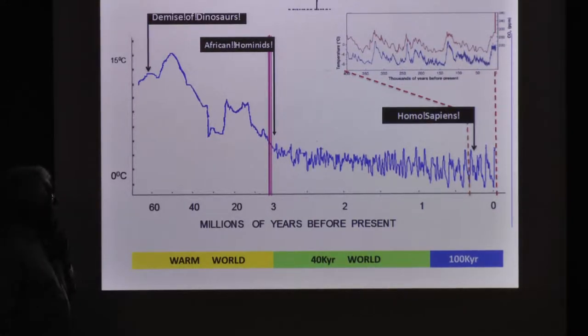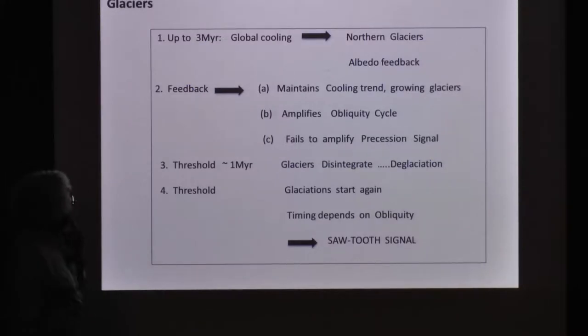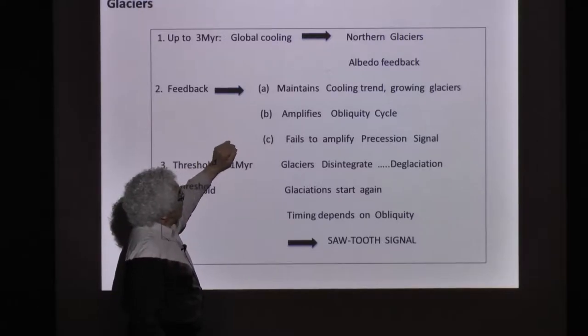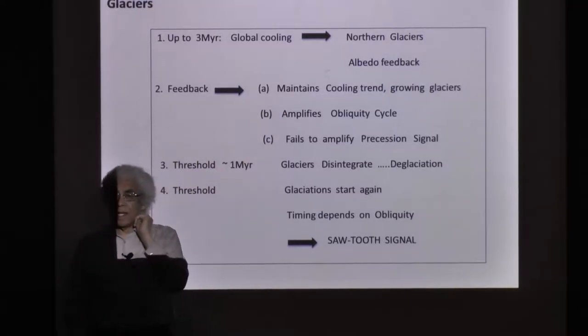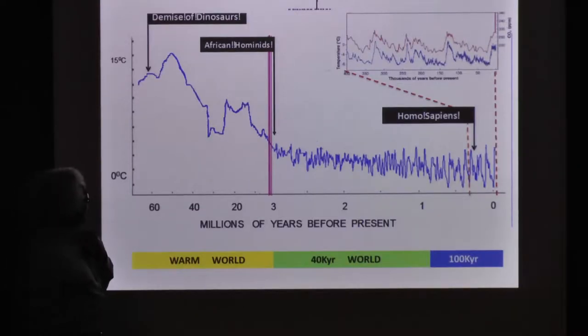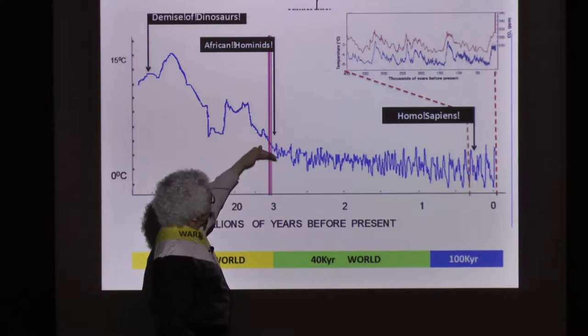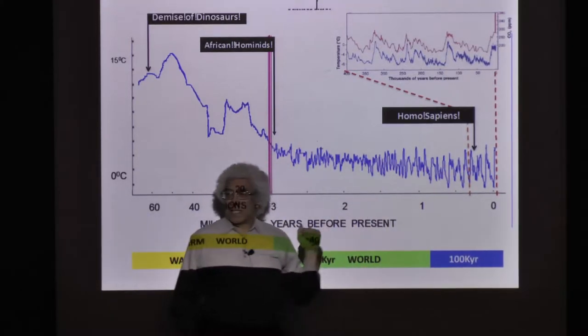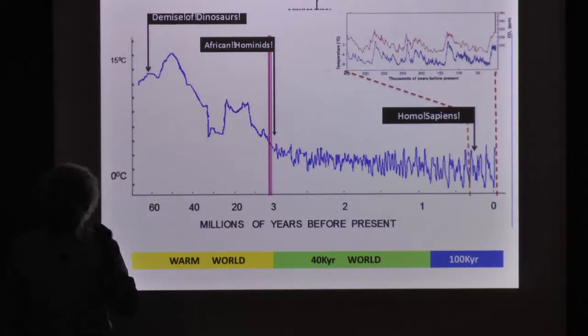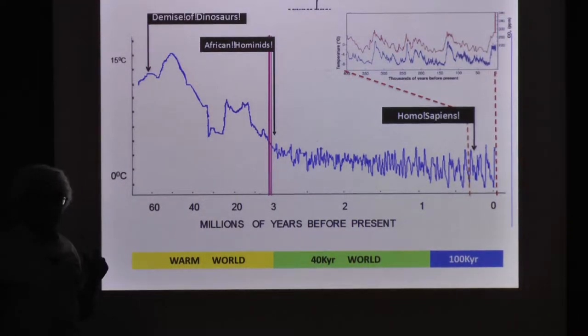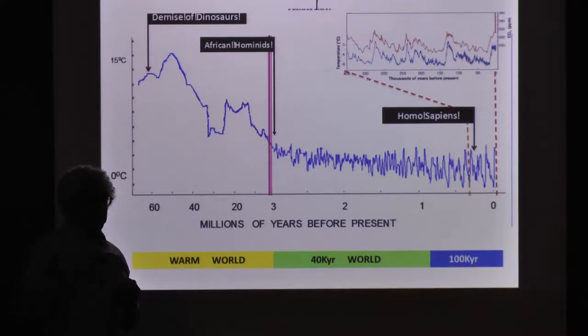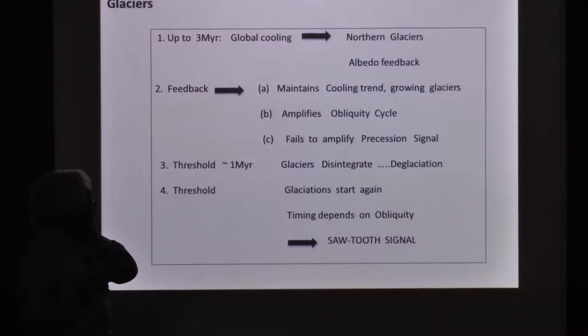That feedback can do two things. It can maintain a trend. You can clearly see it got colder. Take away all the Milankovitch forcing and the globe would have gotten colder anyway. At some point, trends lead to thresholds. Once a glacier is there, it reflects sunlight and deprives the earth of heat. So temperatures fall, precipitation of snow—the glacier grows, it reflects even more sunlight, gets colder and colder.